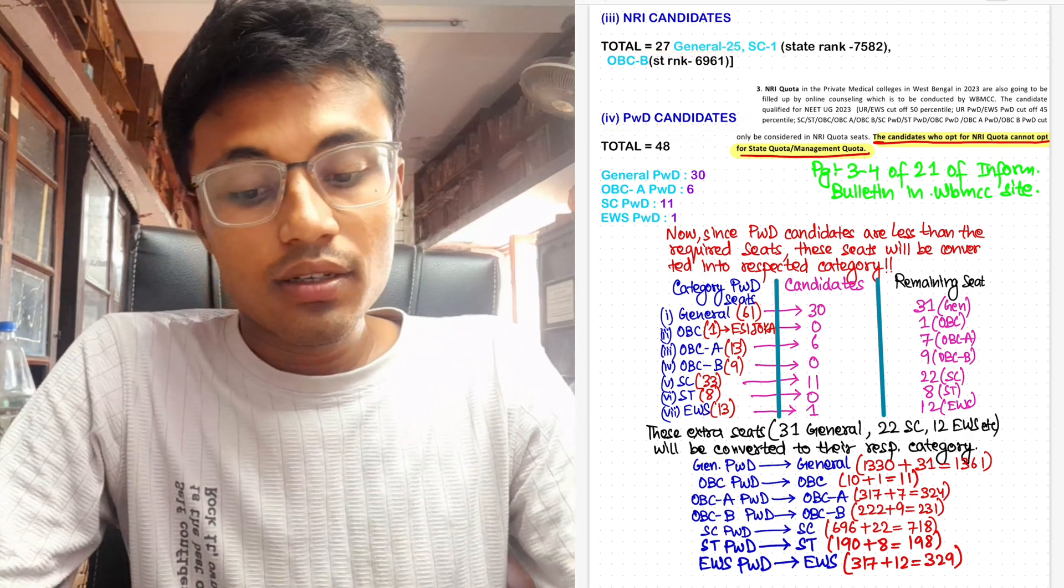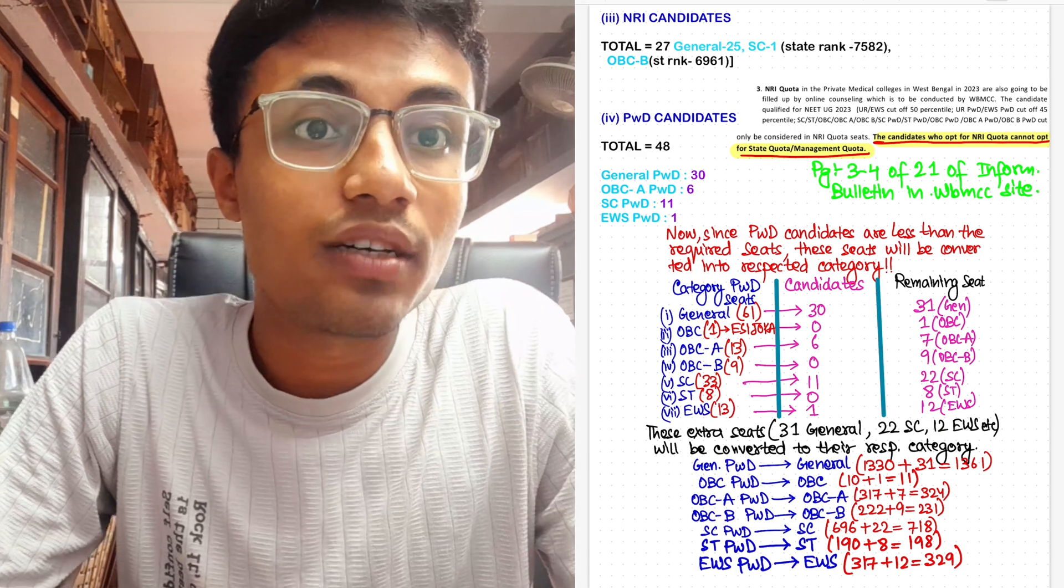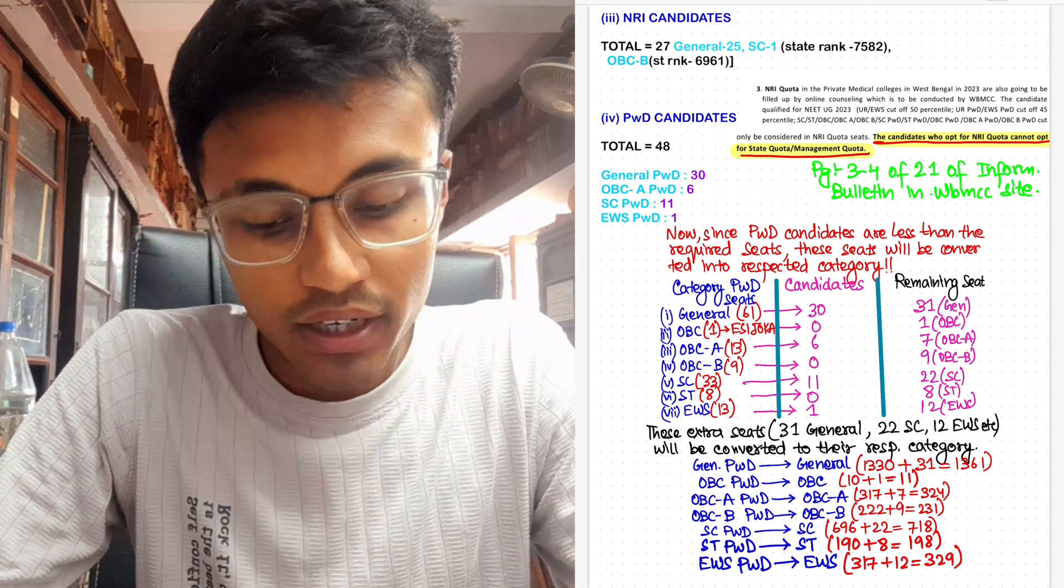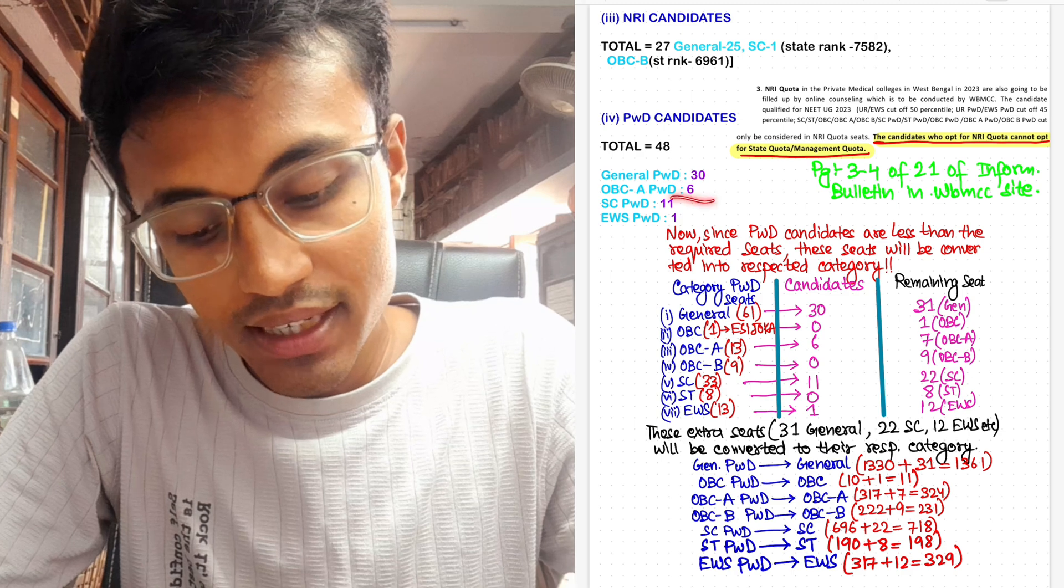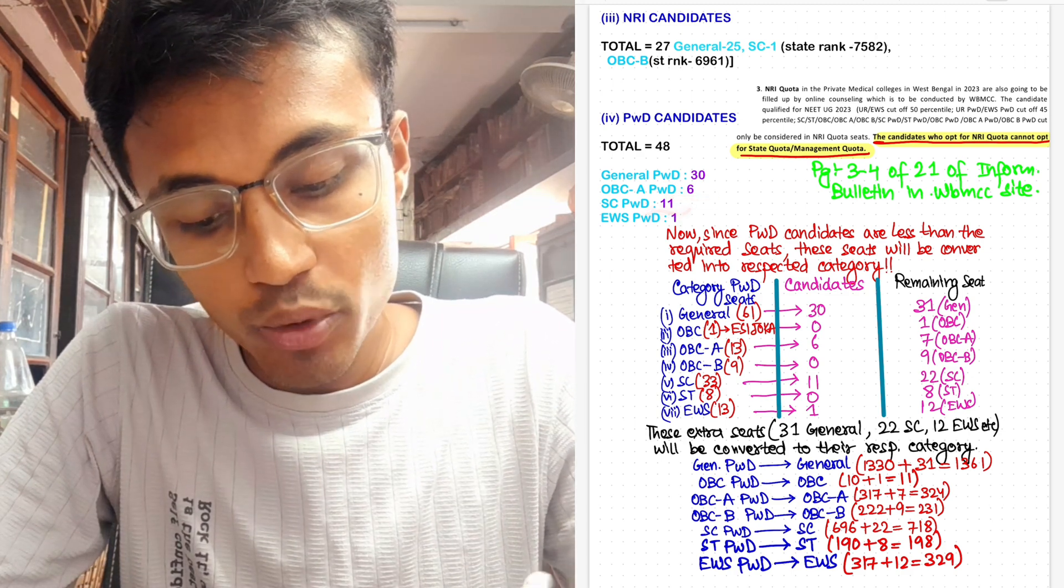Now for the PWD candidates, this year the total of PWD candidates who participated in counseling are 48: General 30, OBC 6, SC 11, and EWS 1.